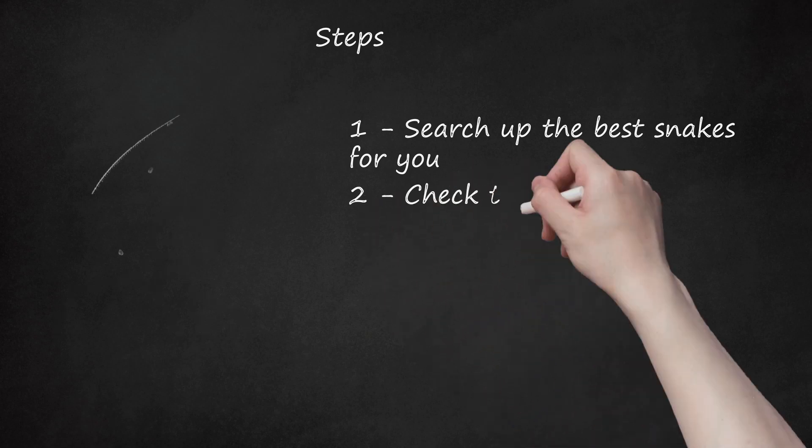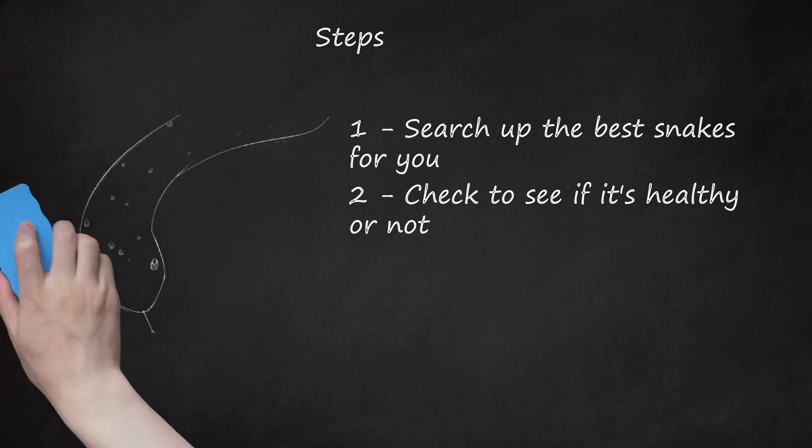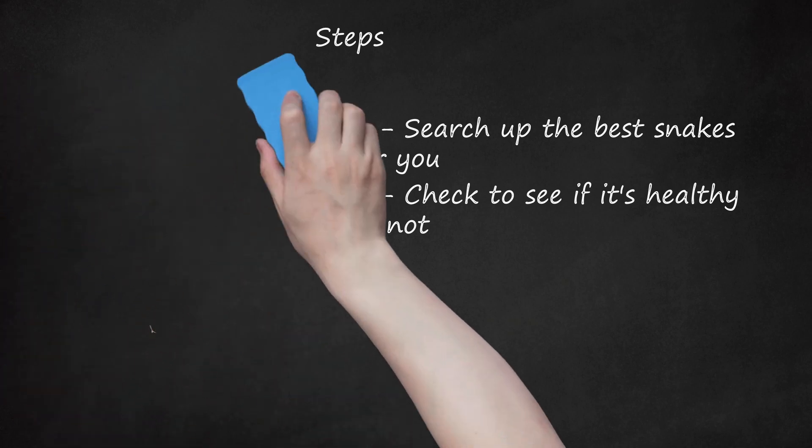2. Check to see if it's healthy or not. If it looks very skinny, don't pick it. It's okay if the snake has milky eyes or bad-looking skin. That means it's shedding skin. If it has very wrinkly skin, then better not take that snake.